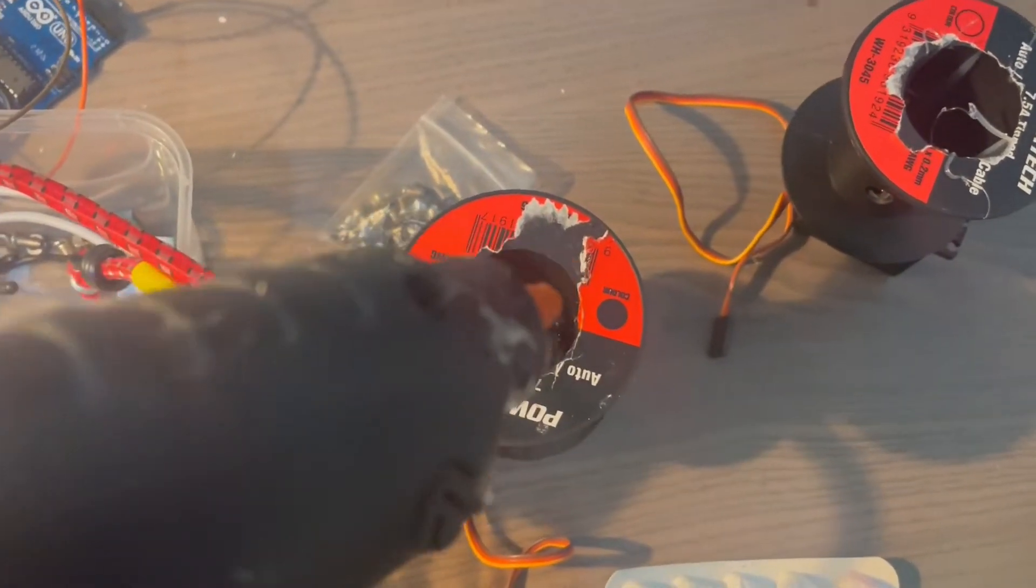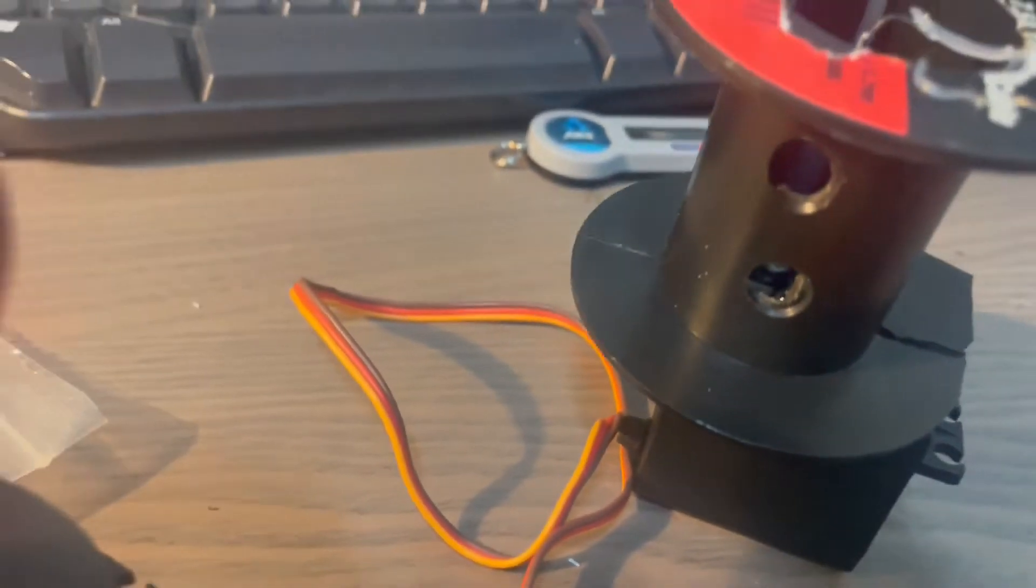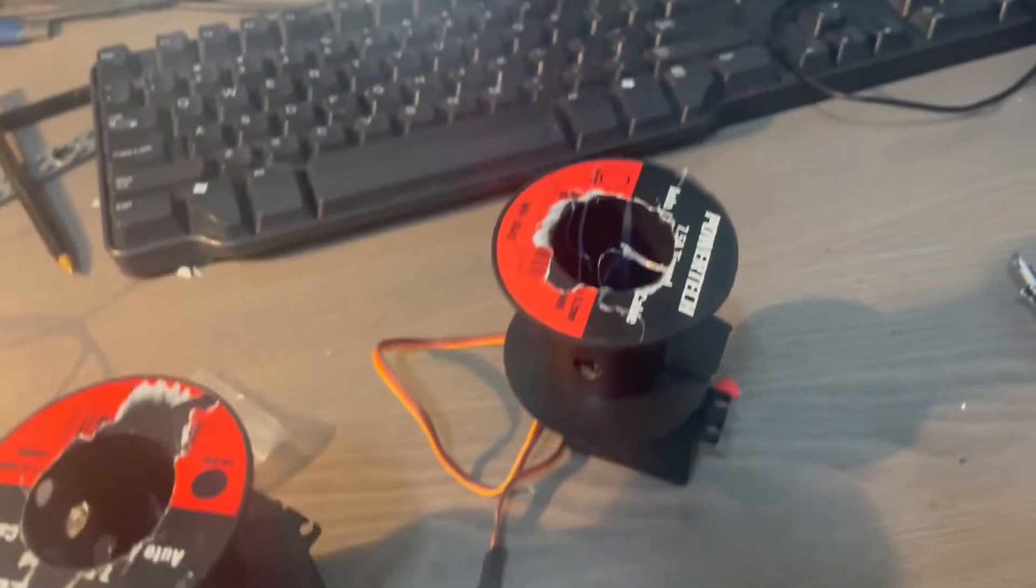So I just put a little bit of hot glue in these holes. See, so these are mounted on the servos. And then you just basically fill them up with hot glue until that bottom hole there. And then hopefully that'll stick.